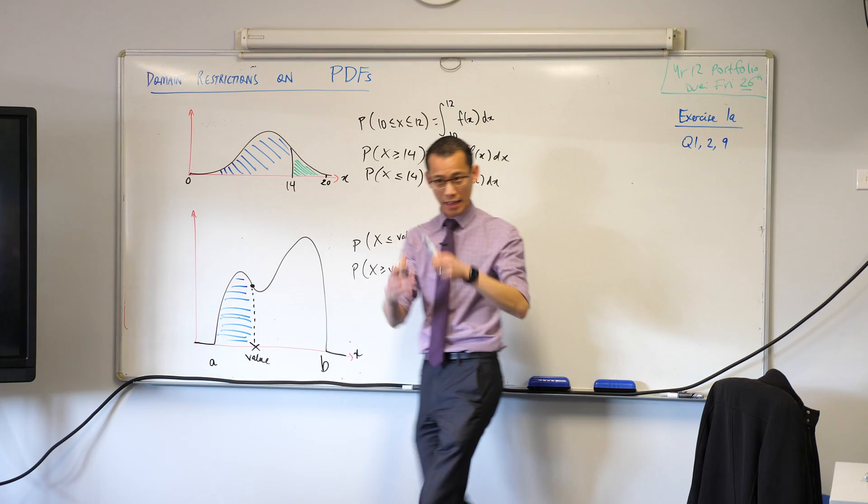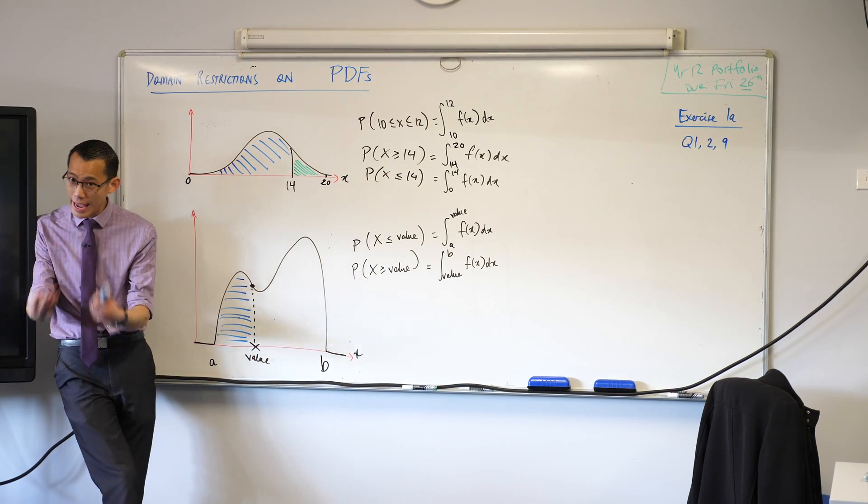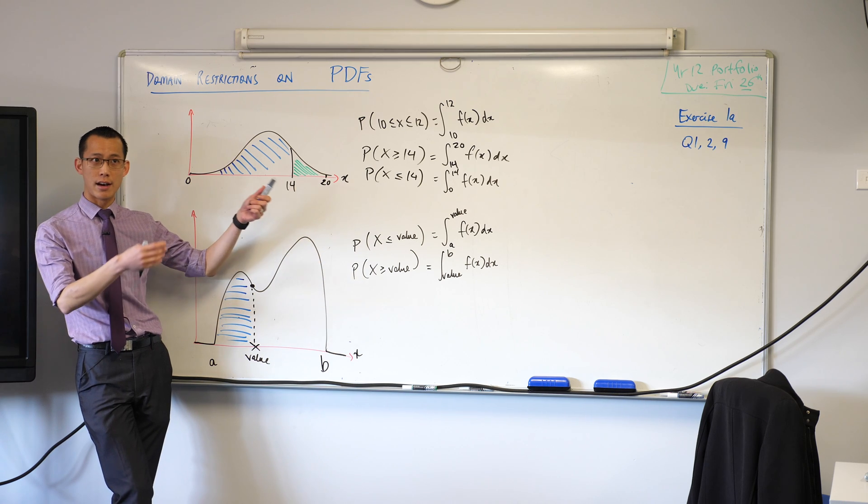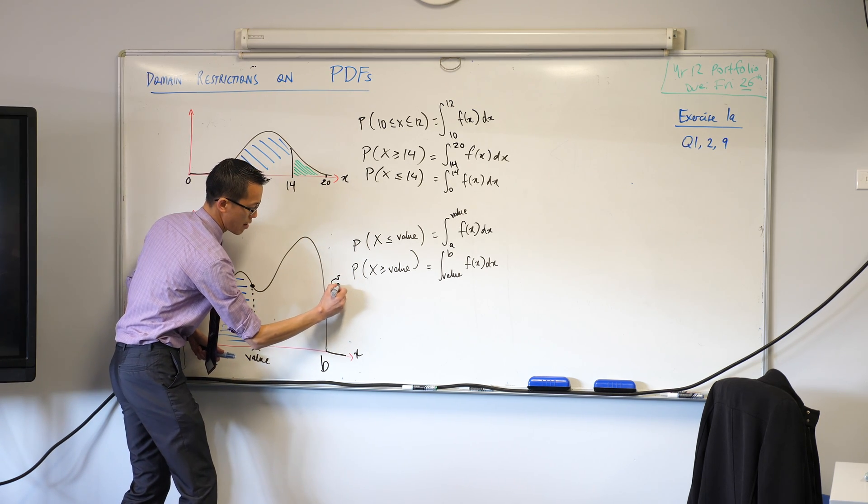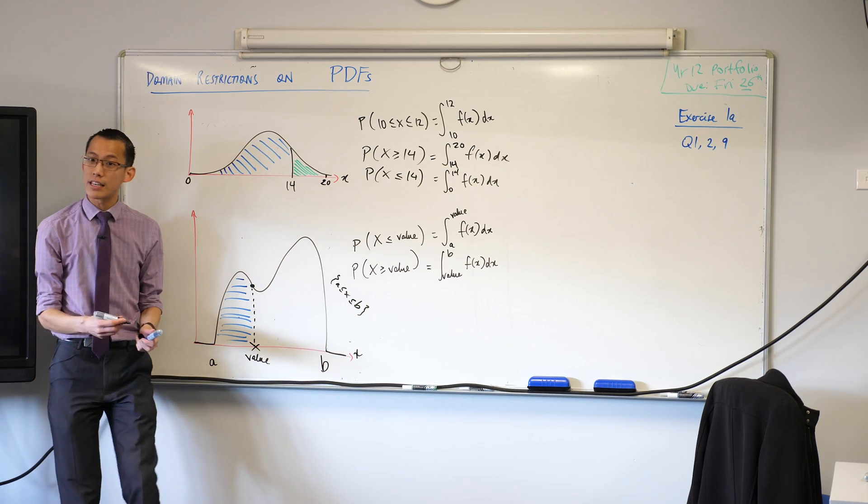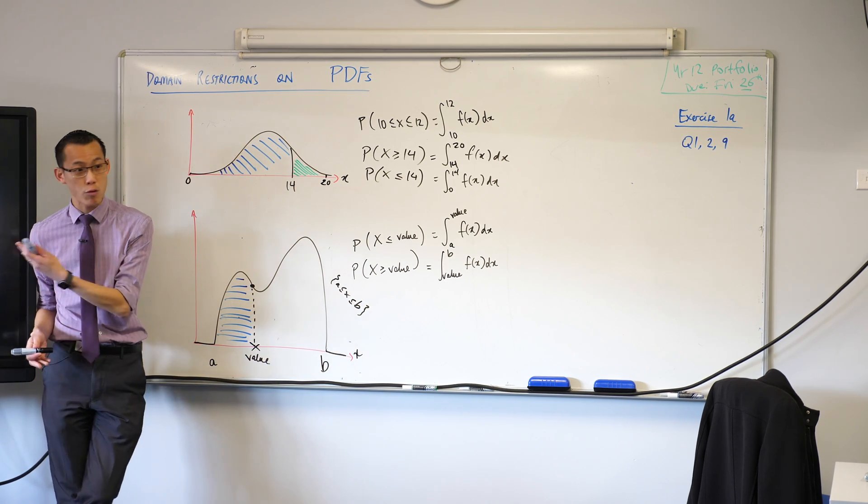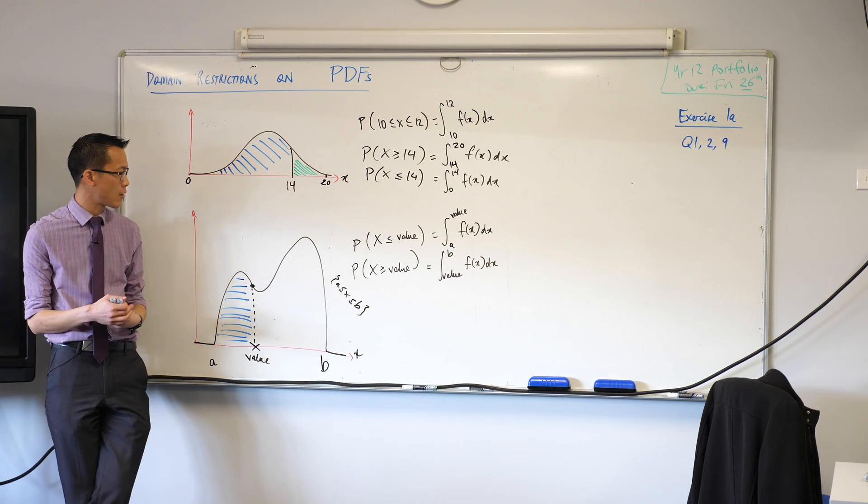Now, it's important that you kind of think about this explicitly, because these domain restrictions, like I said, they don't just get handed to you. Like, you might not get notation that says, 'oh, you know, this guy is defined, a is less than x is less than b.' They won't always explicitly say that to you. You might have to read that out of the situation that you get described to you.